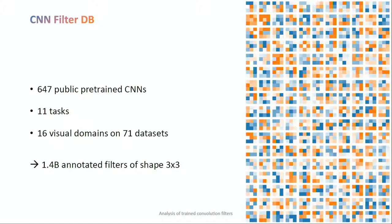To study this, we created CNN FilterDB, a large collection of convolution filters. I went online and downloaded every pre-trained CNN I could find — roughly 650 of those. We made sure they are as different as possible: trained for 11 different tasks including classification, segmentation, and synthesis tasks, and on different kinds of data such as natural photos, medical images, infrared images, and depth maps. In total, 16 categories and 71 datasets. From those, we extracted only filters of shape 3×3, the most common ones, and collected 1.4 billion of them in total.